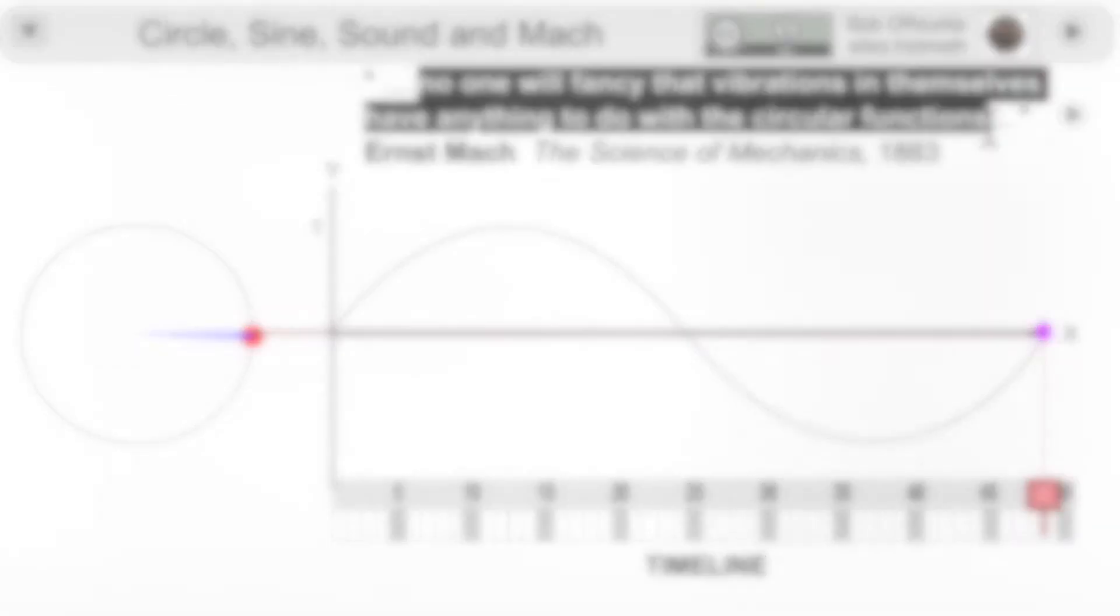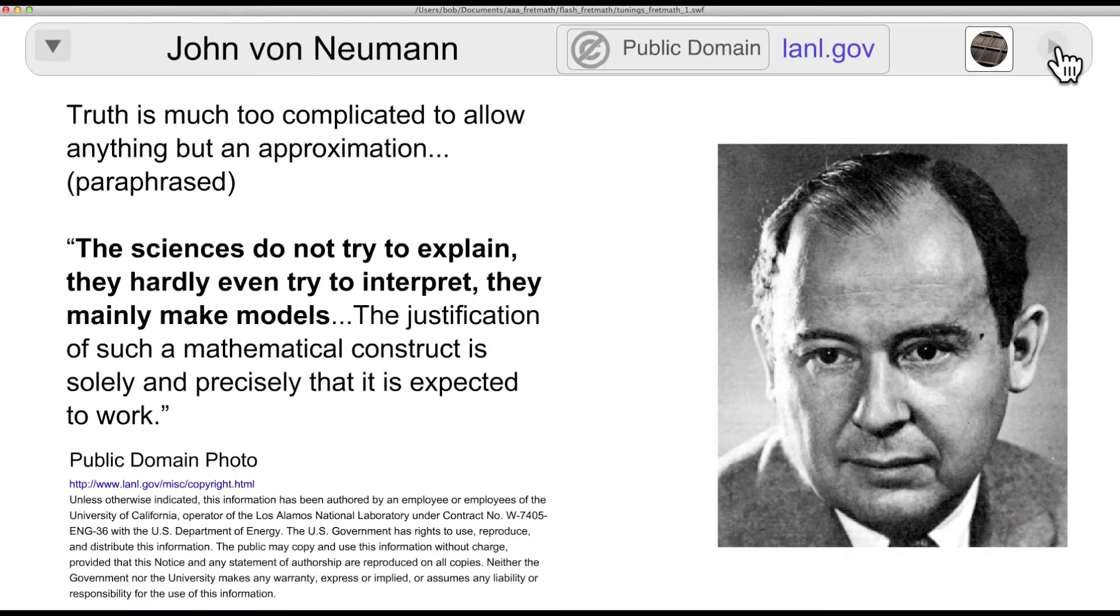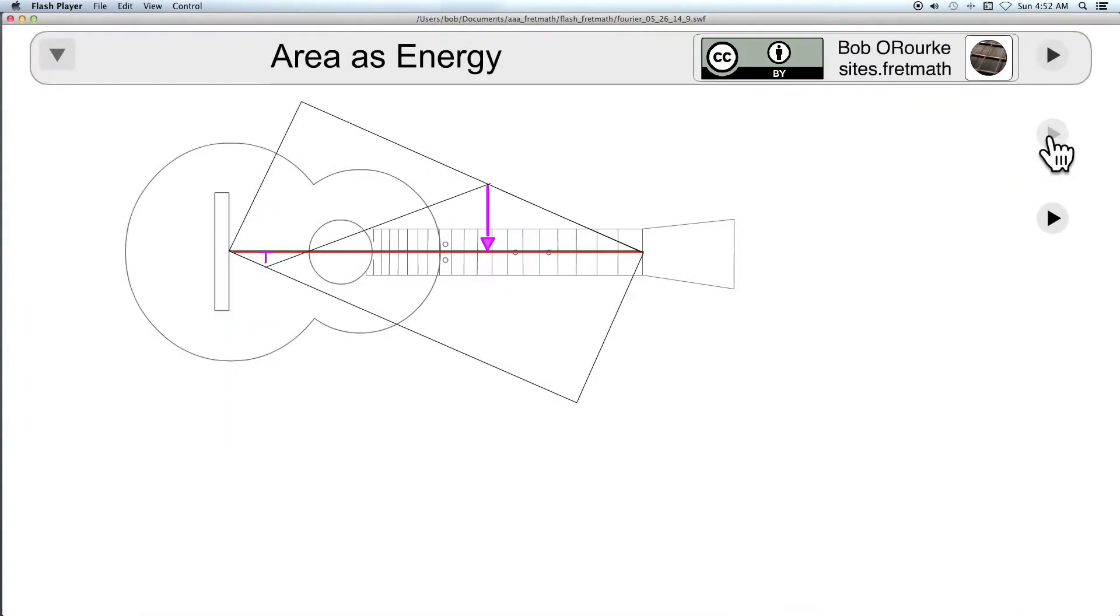This will show how mathematics is used to give an approximate description and understanding of the guitar. The string's energy is partially transformed into the energy of the sound wave. That's the model.